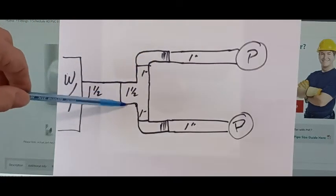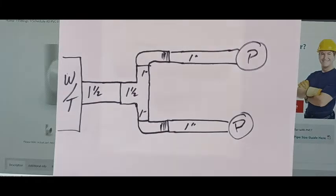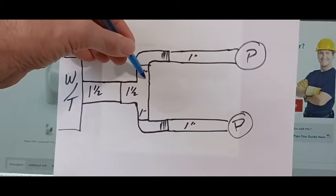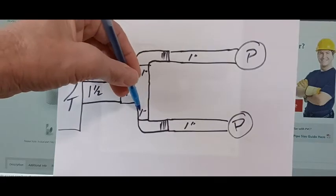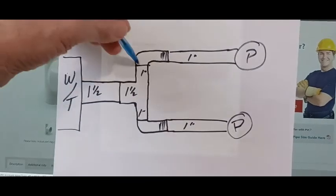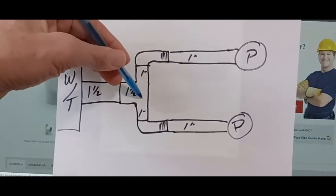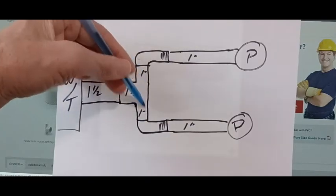You would take an inch and a half T and you would put an inch and a half by inch bushing right here, inch and a half by inch bushing coming off like so. So you've made a header out of it and now you're going to pull to both pumps evenly.